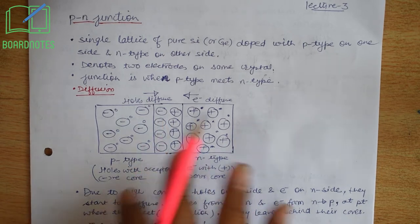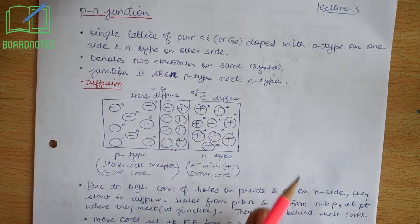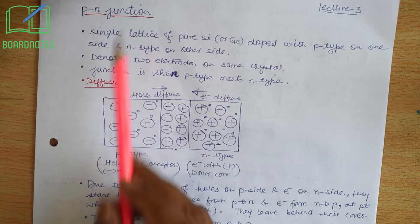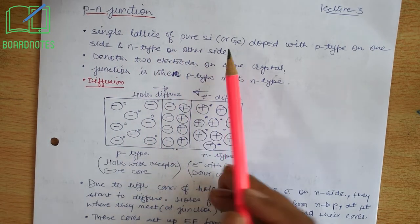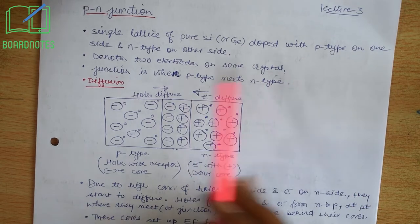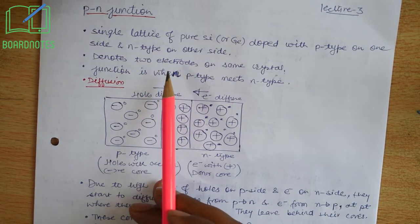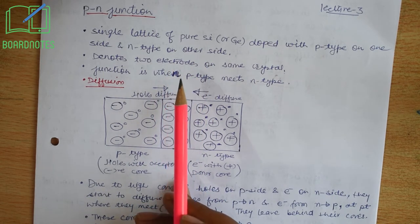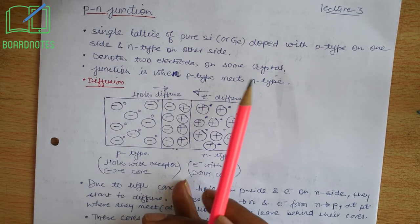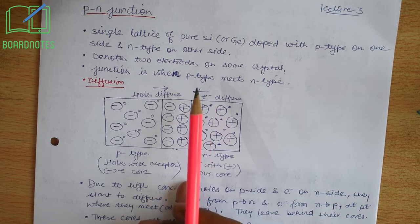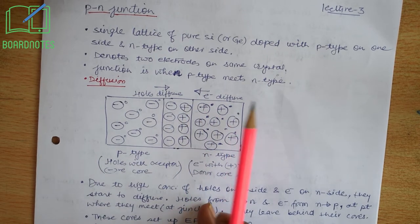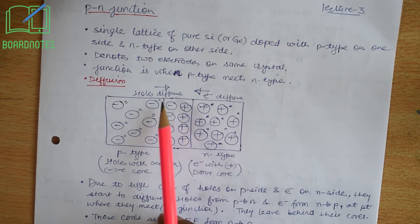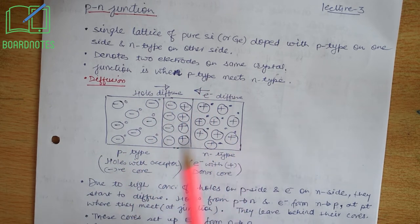We will discuss about p-n junction. We can obtain a p-n junction when a single lattice of pure silicon or germanium is doped with p-type from one side and n-type from the other side. We should take a single lattice of pure semiconductor, dope it with a p-dopant from one side and n-type dopant from the other side. This p-side and n-side form two electrodes on the same crystal, and when p-type meets n-type, what we get is a p-n junction.